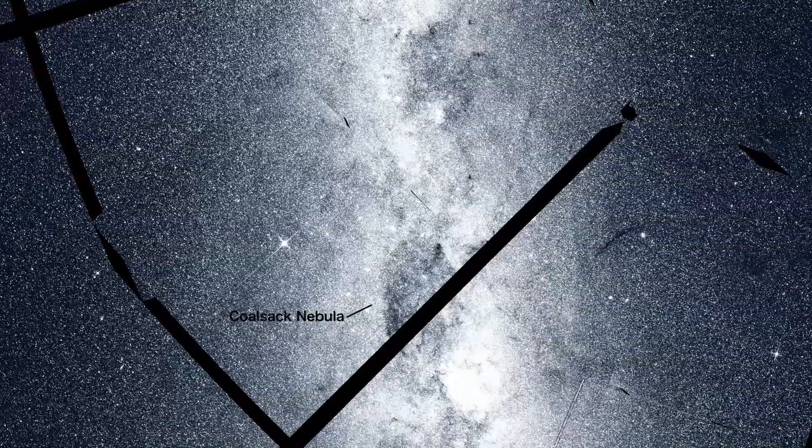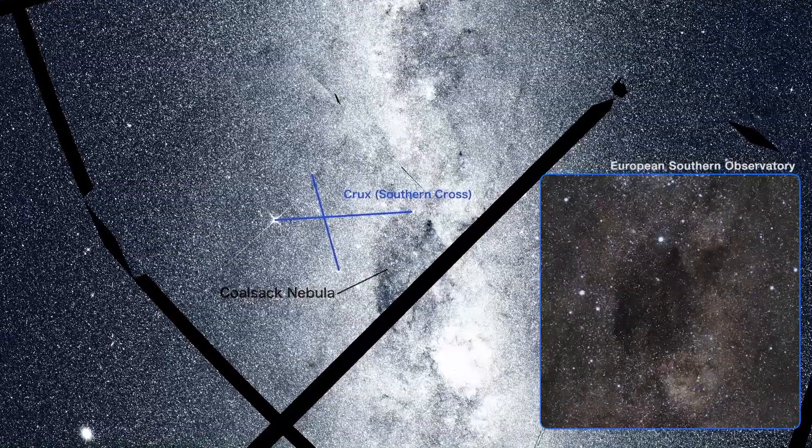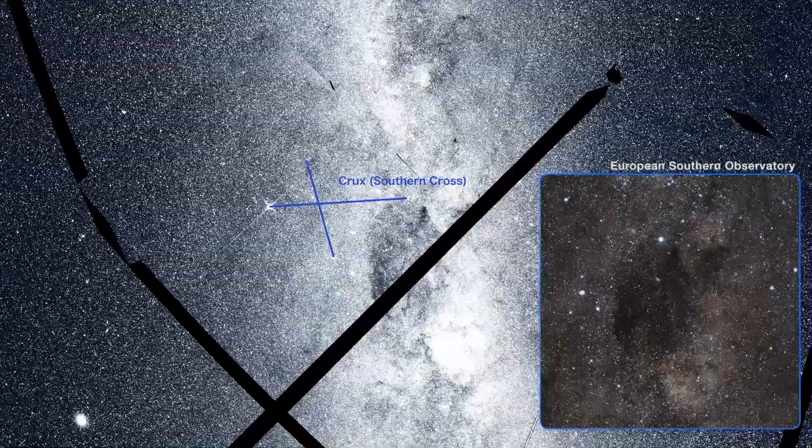Silhouetted by the band of the Milky Way is the Coalsack Nebula, an obscuring cloud of dust in the constellation Crux, also known as the Southern Cross.